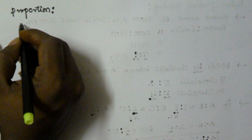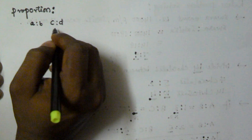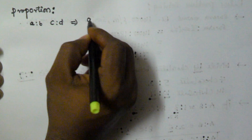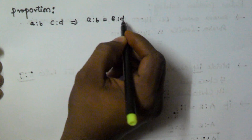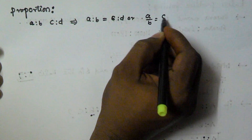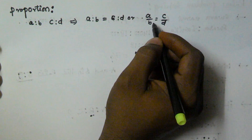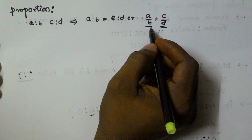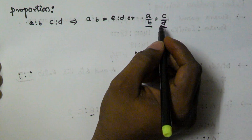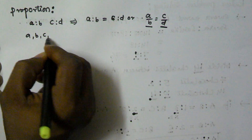In this video we will see what is proportion. A proportion is an equality of two ratios. For example, we have A ratio B and C ratio D, and both of them are equal. So in that case we write A colon B equivalent to C colon D, or A by B is equal to C by D. This is called a proportion, and we say that the four numbers A, B, C, and D are in proportion.